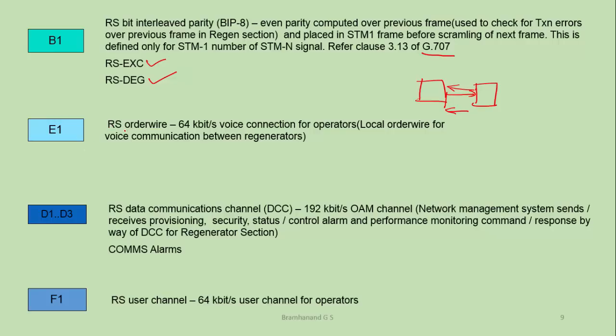The E1 byte is used for regenerator section order wire. This is one of the bytes which helps field engineers communicate between regenerators in the transmission network. It acts as a 64 kbps voice channel between regenerators, and is very helpful to debug issues in the regenerator section by way of communication between two operators.